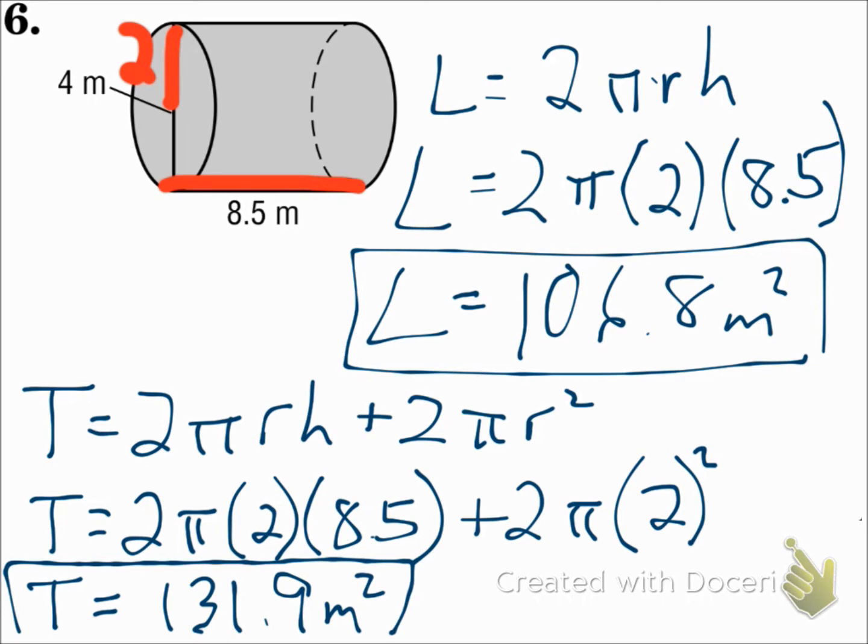Use the formula, substitute in the correct value. We didn't know the radius, so we had to find it, and then punch it all in. Make sure you hit the pi button and not 3.14.